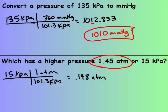In the first example, you should have gotten 1012.833 in the calculator, but again we only want three significant figures. This one is our last sig fig, which means all the numbers to the decimal turn into zeros. If you only put 101, that's not the same thing as 1010 — you needed that placeholder zero. For the bottom one, you could have converted either of them — ATM to kPa or kPa to ATM. I converted kPa to ATM. Now they're in the same unit, so I can compare. 1.45 is much larger than 0.148, therefore it has the larger pressure.